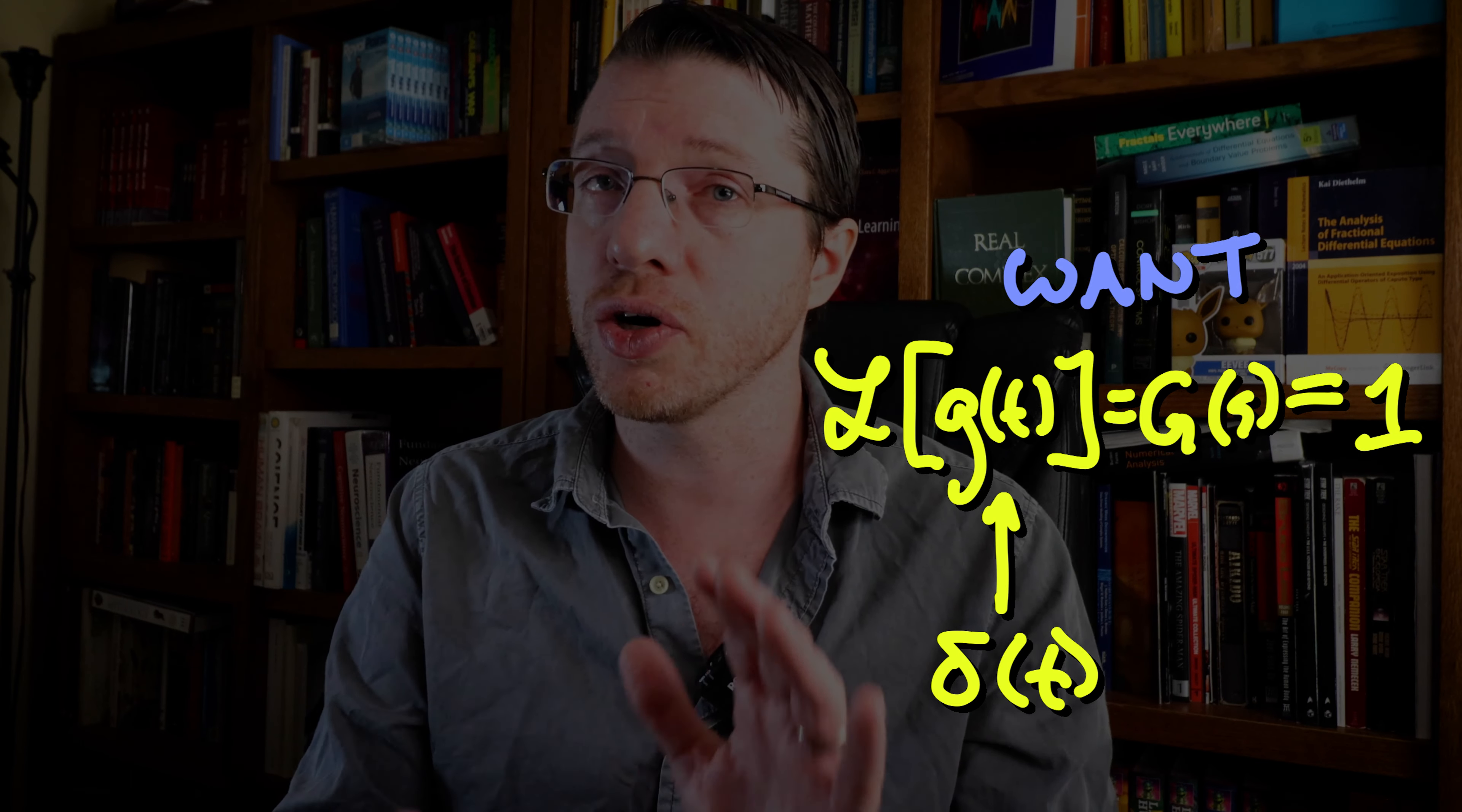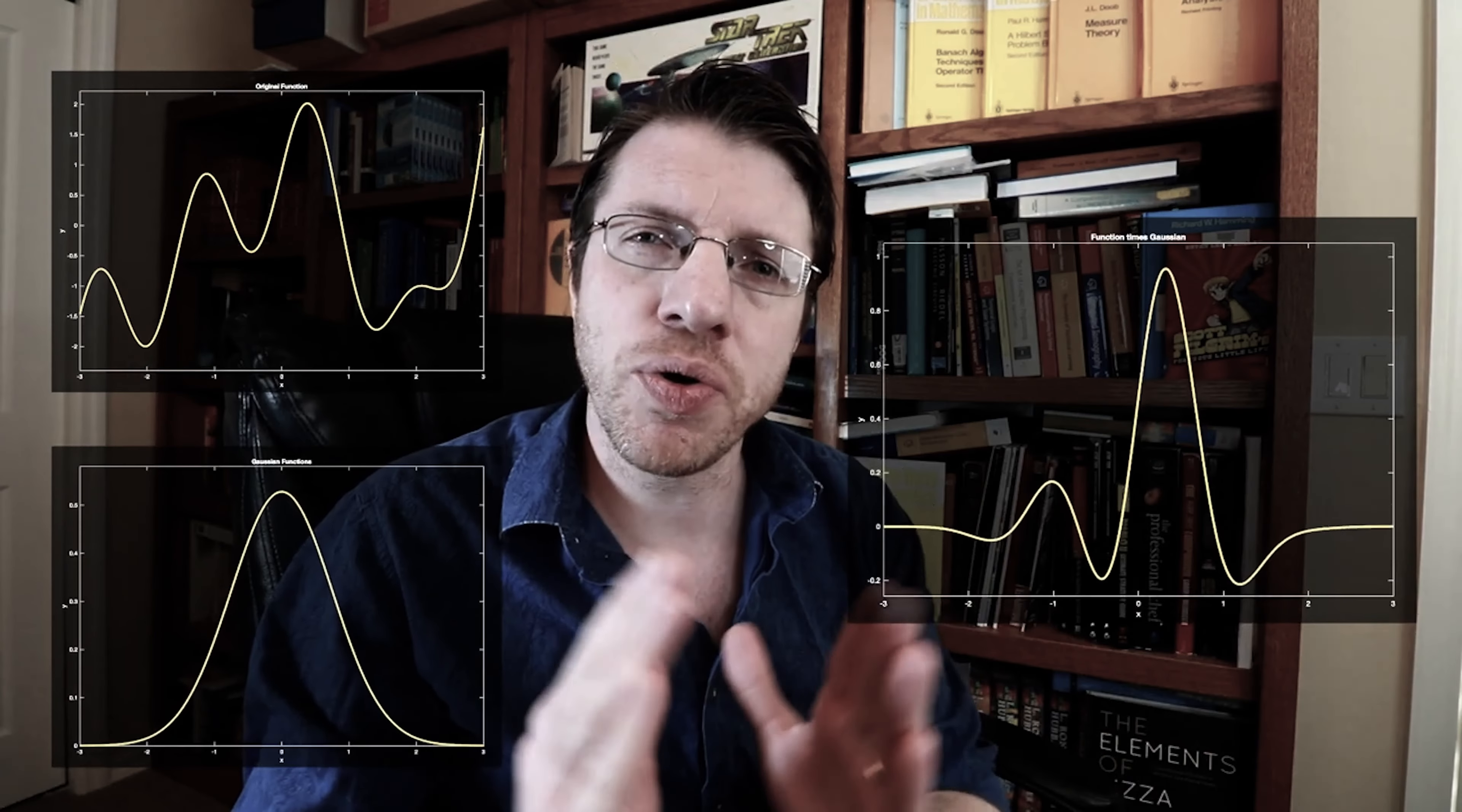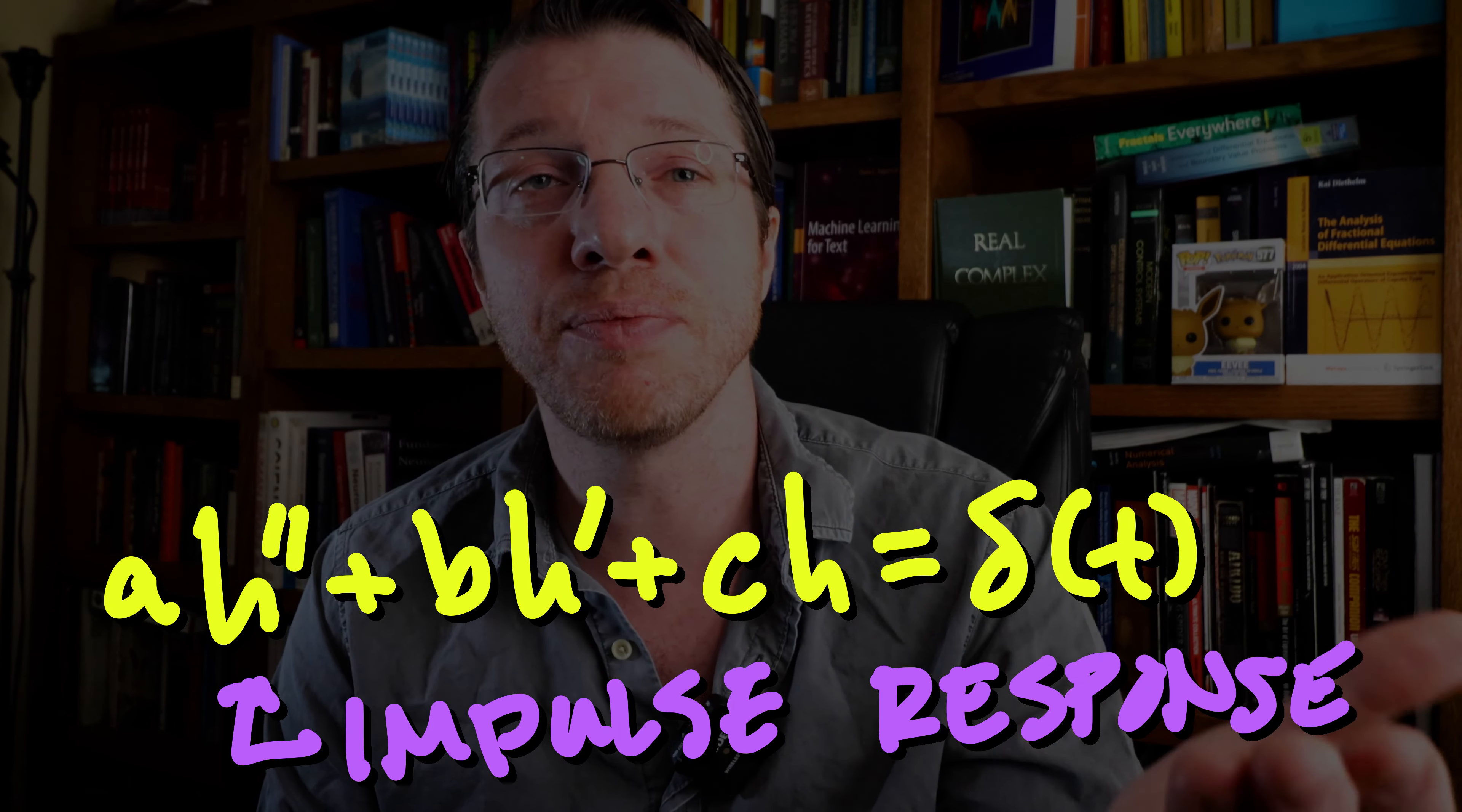We usually describe delta in a cartoon form as a giant impulse at zero and zero everywhere else. This comes from some common ways of estimating the delta function with a whole bunch of spiky functions. So the transfer function is the Laplace transform of the system output with an impulsive input, or the impulse response.